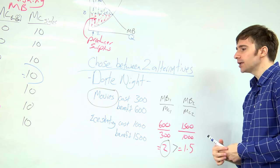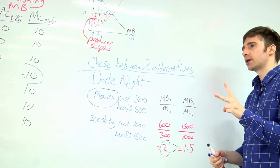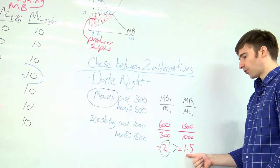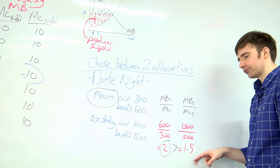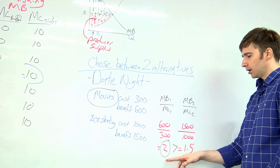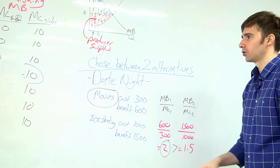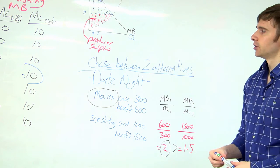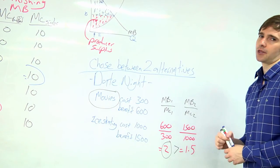What this two means is, for every one in cost, you have two in benefit. And what this is saying is, for every one in cost, you only have one point five in benefit. So this is giving you more benefit to cost ratio. So you would choose to go see the movies. So that's a quick summary on how marginal utility works. Thank you.